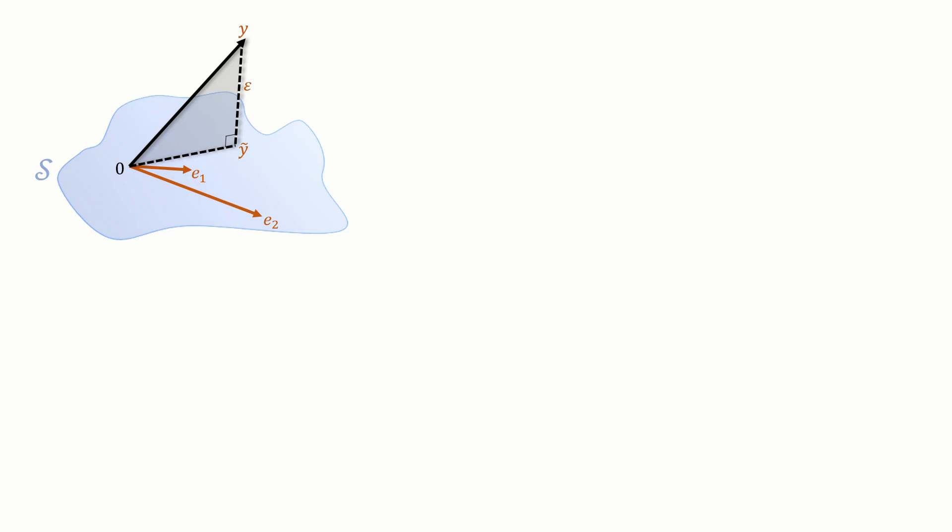Here's a picture of two vectors e1 and e2 and their span S. I've also drawn another vector y sticking out of the plane of S. A standard sort of question in geometry is how close can we get to y while staying inside S? In this picture I've labeled the closest point as y tilde and the distance as epsilon.